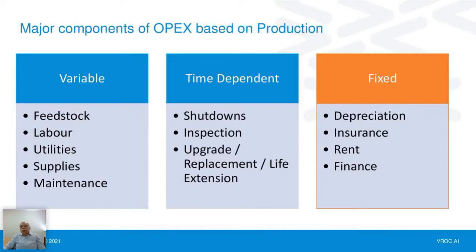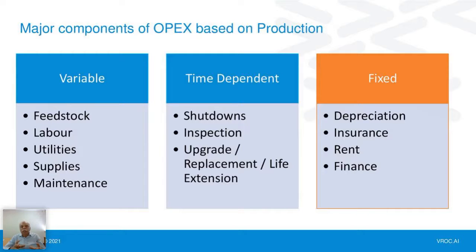What are the major components of OPEX based on production? Let's focus on production aspects and things that are more visible and have greater impact. There are variable costs — the cost of oil or gas coming into the system from exploration, labor, utilities, supplies, and maintenance. Then there are time-dependent costs, which are very significant — shutdowns, inspections, upgrades, replacements, and life extension are becoming a huge issue. Being able to decrease the interval or reduce the time spent on these activities has a huge impact on OPEX. Then there are fixed costs based on money already spent, which we won't focus on as much.